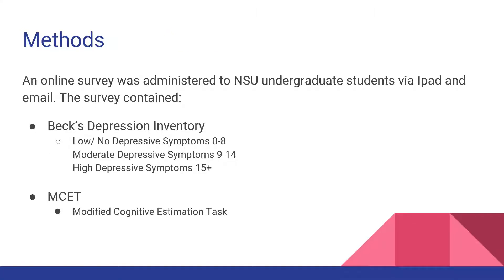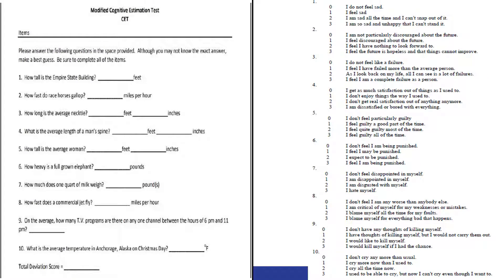The data collection methods for this study included an online survey which was administered in person via iPads to NSU undergraduate students and also via email. The survey contained the Beck Depression Inventory which totaled 21 questions and the MCET which totaled 10 questions. The MCET consisted of 10 questions which required participants to estimate certain units, amounts, speeds, etc. for the various questions. Participants were not supposed to know the exact answer but they were supposed to give their best guess and this would therefore measure the participants' executive functions.